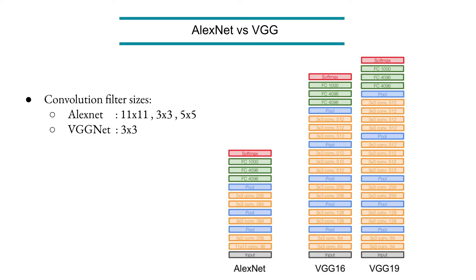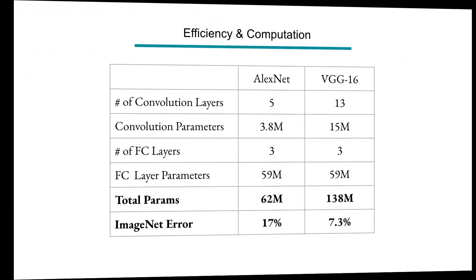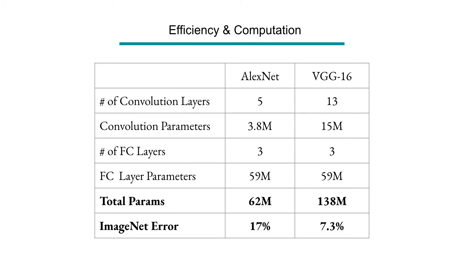To summarize: AlexNet was using 11x11, 3x3, and 5x5. VGGNet made a standard and used all 3x3, then multiple steps of combinations. How deep? AlexNet was 7 layers; VGG is 16, and the other version is 18 layers. When we compare the efficiency in computation, AlexNet used 5 convolution layers and VGG has 13. For fully-connected layers, AlexNet has 3 and VGG has 3.